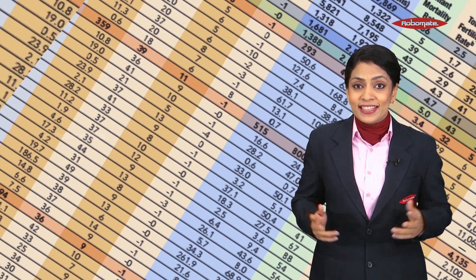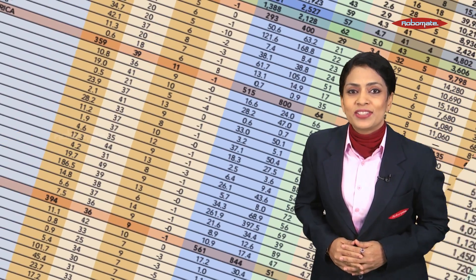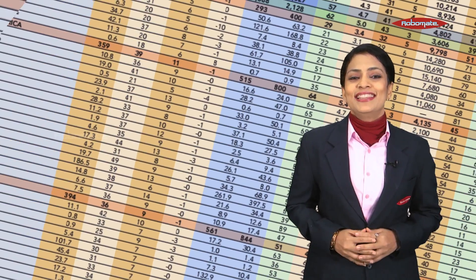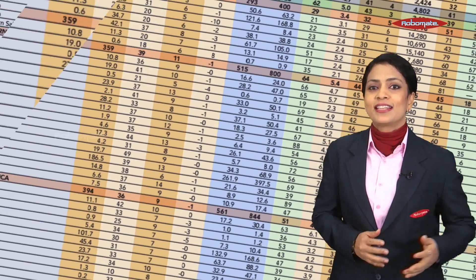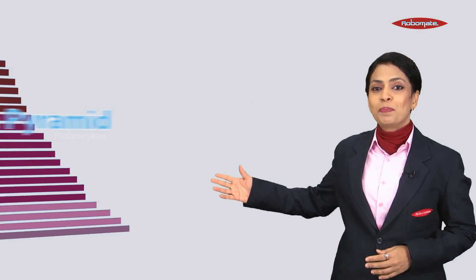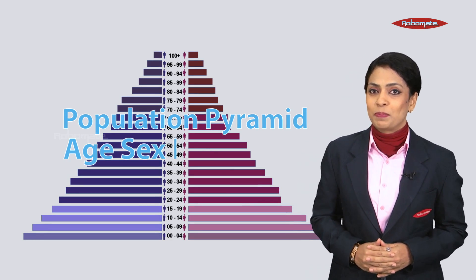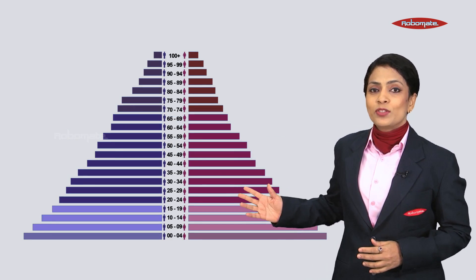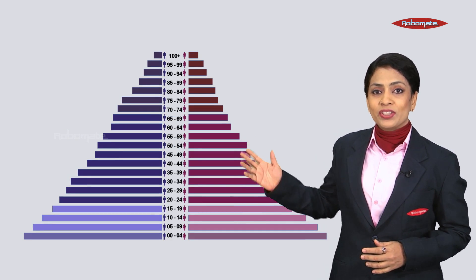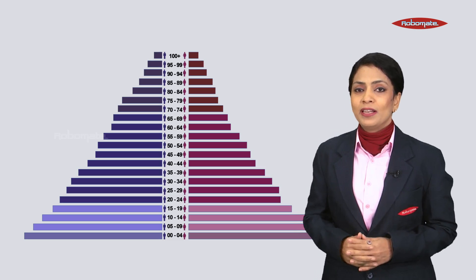Complex data is more easily interpreted through visualization. One of the ways that demographers represent the internal distribution of a population is the population pyramid, also called the age-sex pyramid. Here the total population is divided into various age groups — for example, 0 to 4 years, 5 to 9 years, and continuing up to 100 and above.